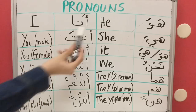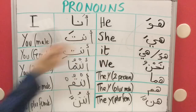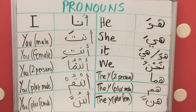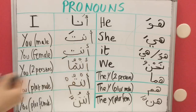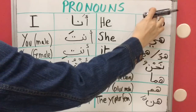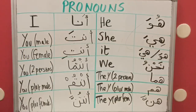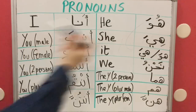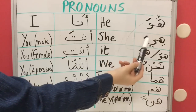Moving on to 'He'. He is 'Huwa'. So He is 'Huwa'. And She is 'Hiya'.